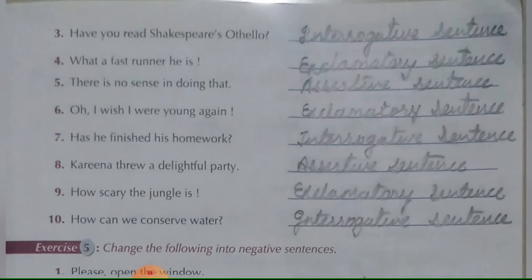Seventh: 'Has he finished his work?' — this is an interrogative sentence because it ends in a question mark and starts with the helping verb 'has.' Eighth: 'Kareena threw an earthly rightful party' — this is an assertive sentence. Ninth: 'How scary the jungle is' — this is an exclamatory sentence. Tenth: 'How can we conserve water?' — this is an interrogative sentence because it ends in a question mark and starts with the wh-word 'how.'